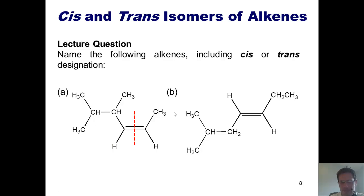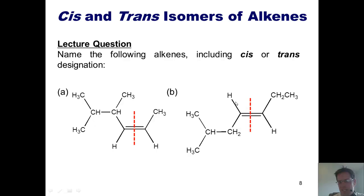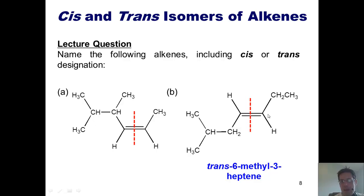For this next example, I number right-to-left because that gives me the lowest number where the alkene is, and this ends up being a 3-heptene. Drawing a dotted line right down the middle of the double bond, I ask which sides the hydrogens are on relative to each other. These are on opposing sides, thus this is a trans-3-heptene.